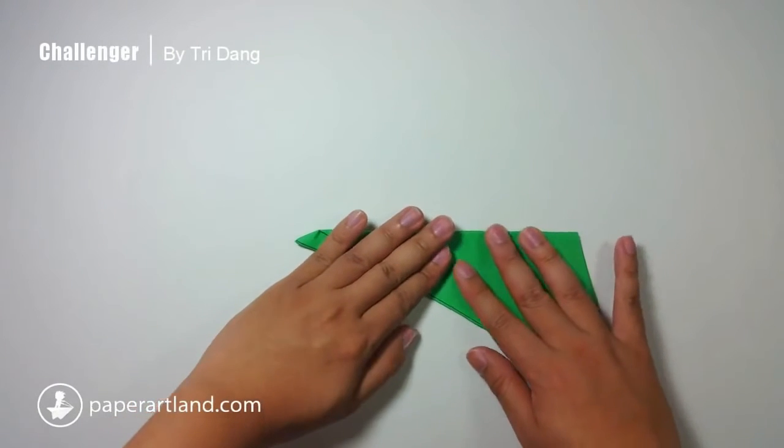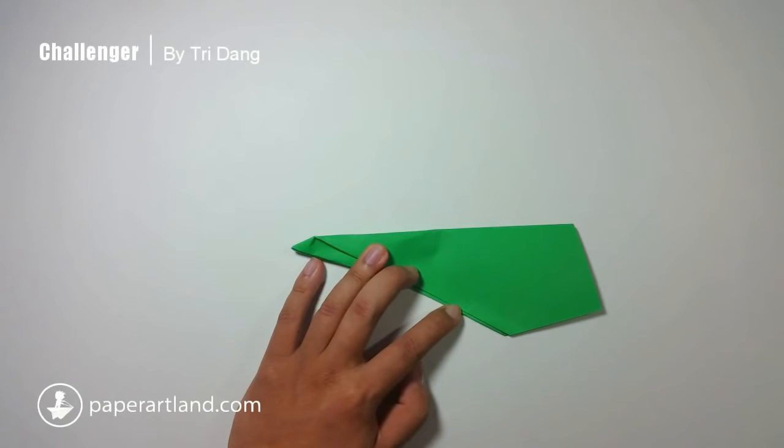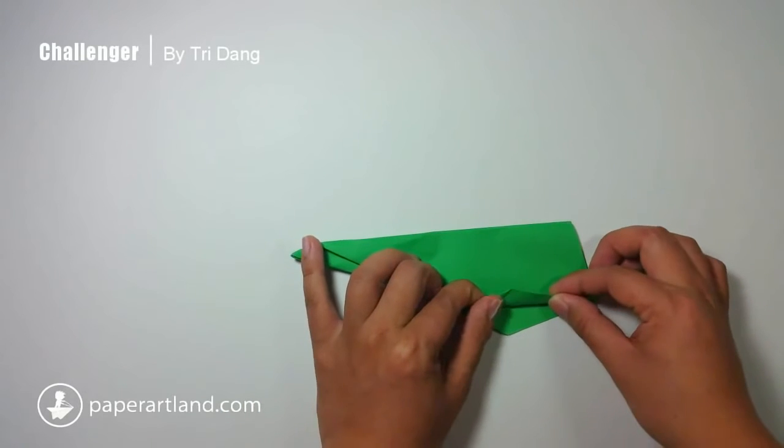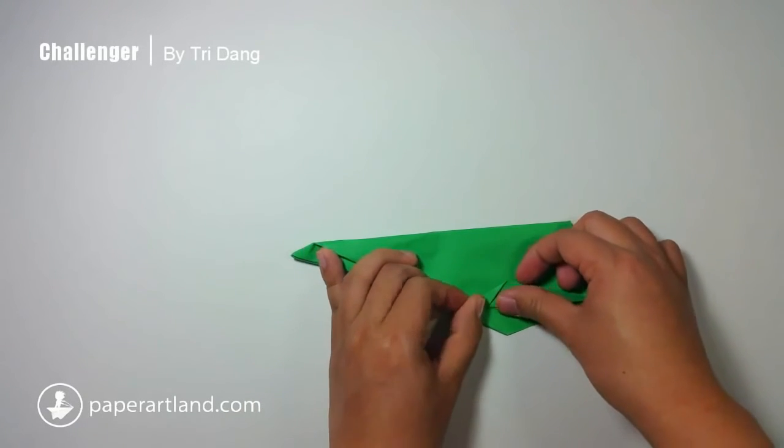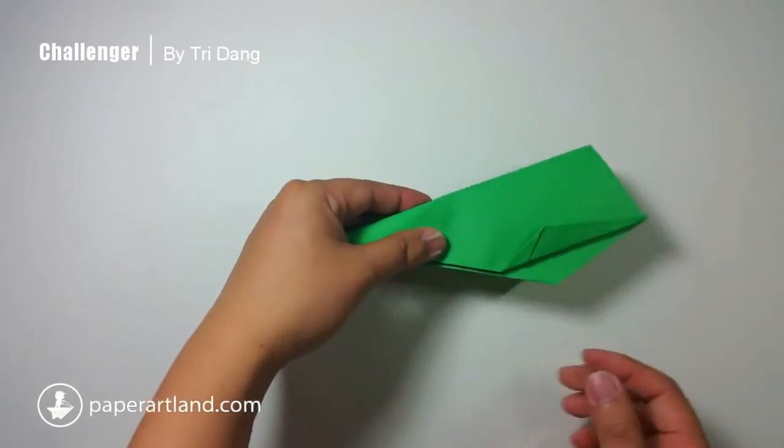And then, turn the paper this way. Next step, I am going to create this stabilizer. So, I imagine that I have a line from this edge straight to this corner. And it needs to parallel with this edge. And then, I repeat the same fold for the other side.